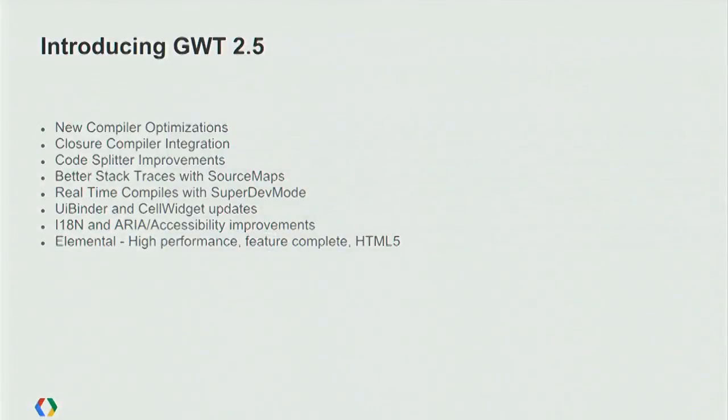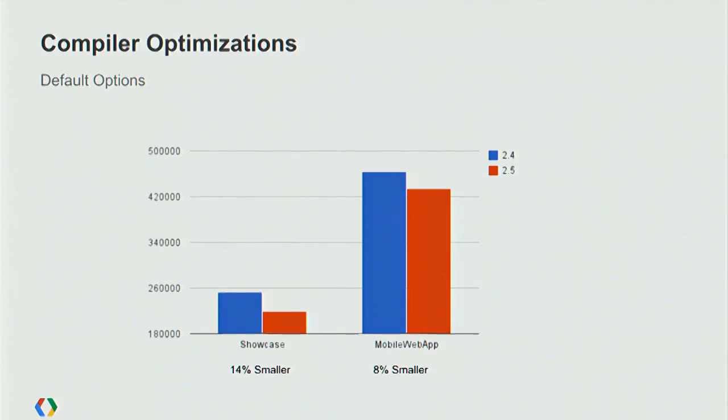Over the last year, we've done a lot. The GWT 2.5 release we're introducing today is the largest release since GWT 2.1 — we've added more in 2.5 than in 2.2, 2.3, and 2.4 put together. First, we did a lot of work on the compiler. Out of the box, with no changes to your code, just recompiling your application will get you a substantial code size reduction. For example, the Showcase application recompiled with GWT 2.5 is 14% smaller JavaScript. The mobile web app is 8% smaller. The larger the app, the better the benefit.